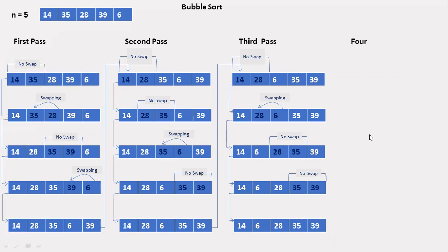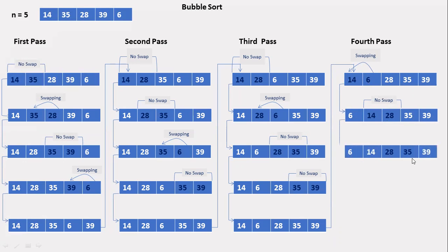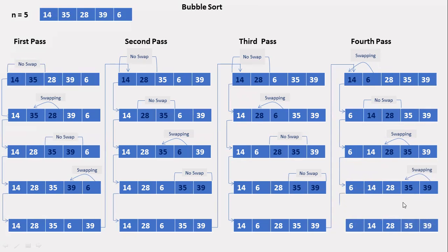In the fourth pass, we compare 14 and 6. Since 6 is smaller than 14, we swap them to get 6, 14. Next, we compare 14 with 28 — 28 is greater, no swap. Then 28 with 35 — 35 is greater, no swap. Then 35 with 39 — 39 is greater, no swap. After the fourth pass, the sorted array is: 6, 14, 28, 35, 39 — sorted in ascending order.